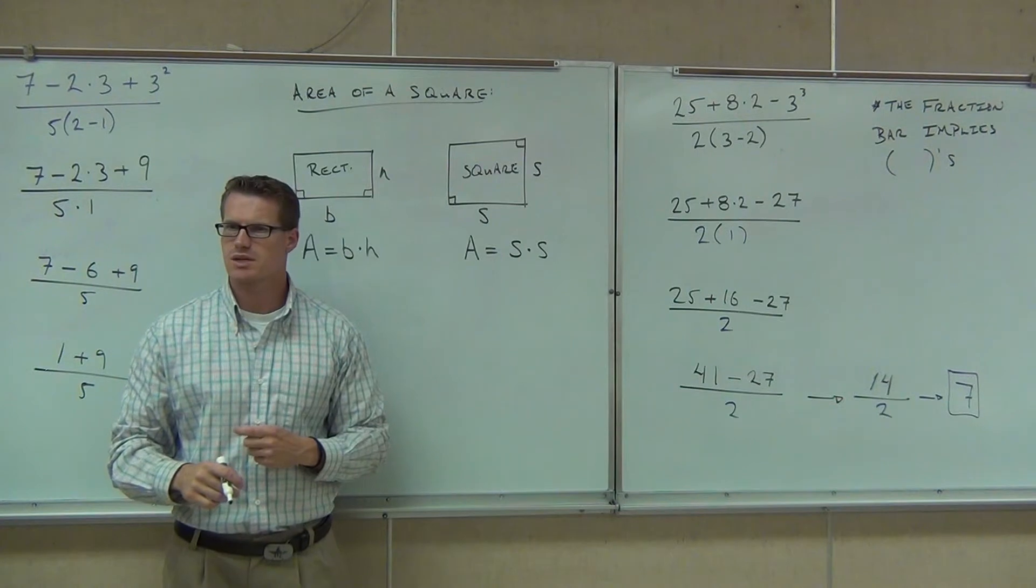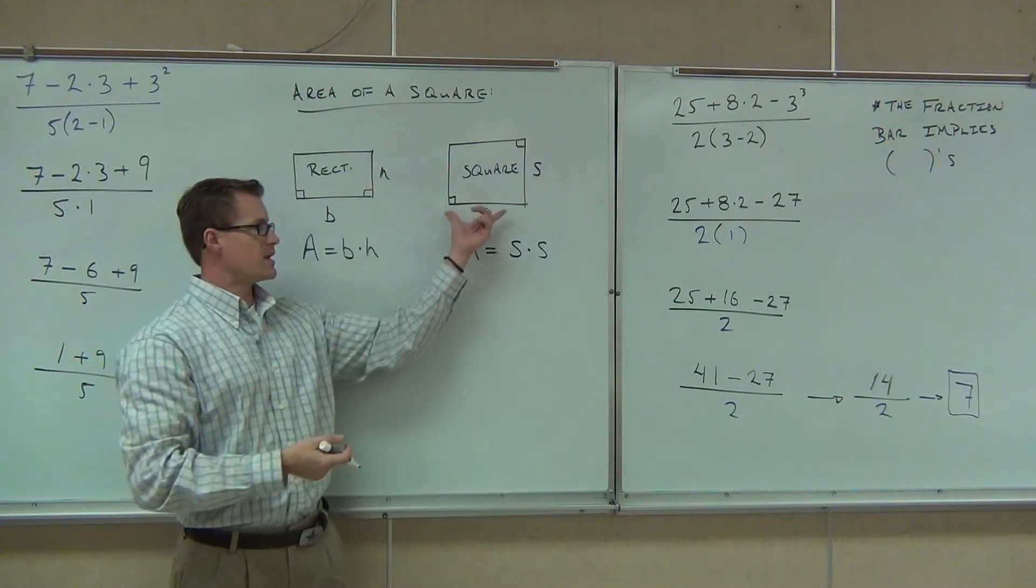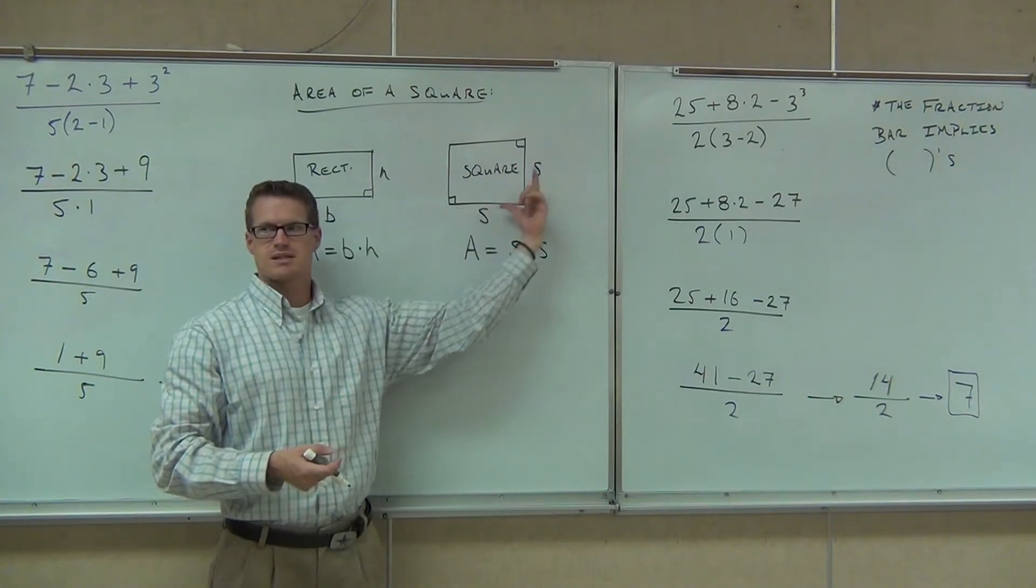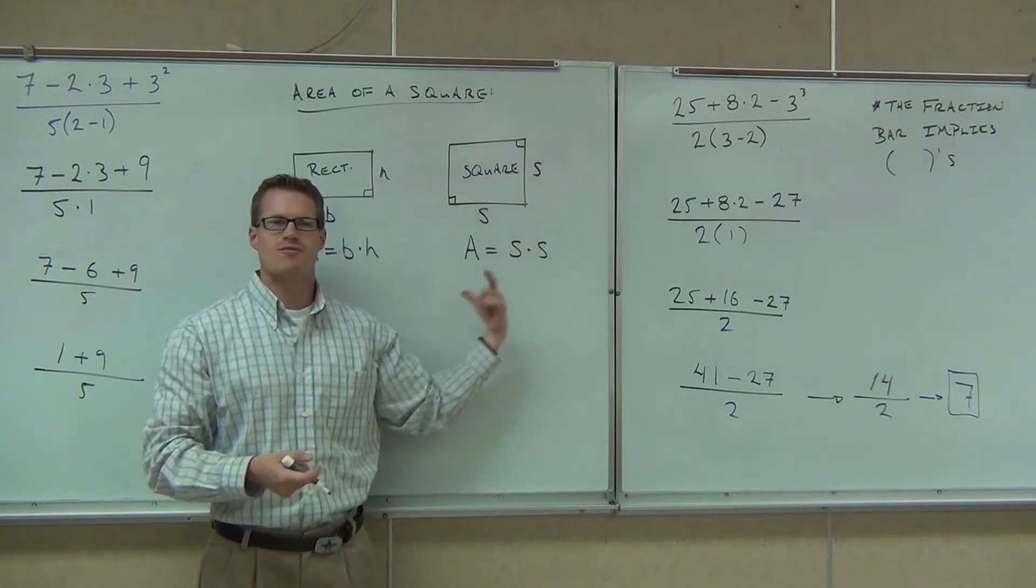Do you see where we're getting S times S? That's still the base. The base and the height are the same. So this would still be base times height. It's just we have the same value there.